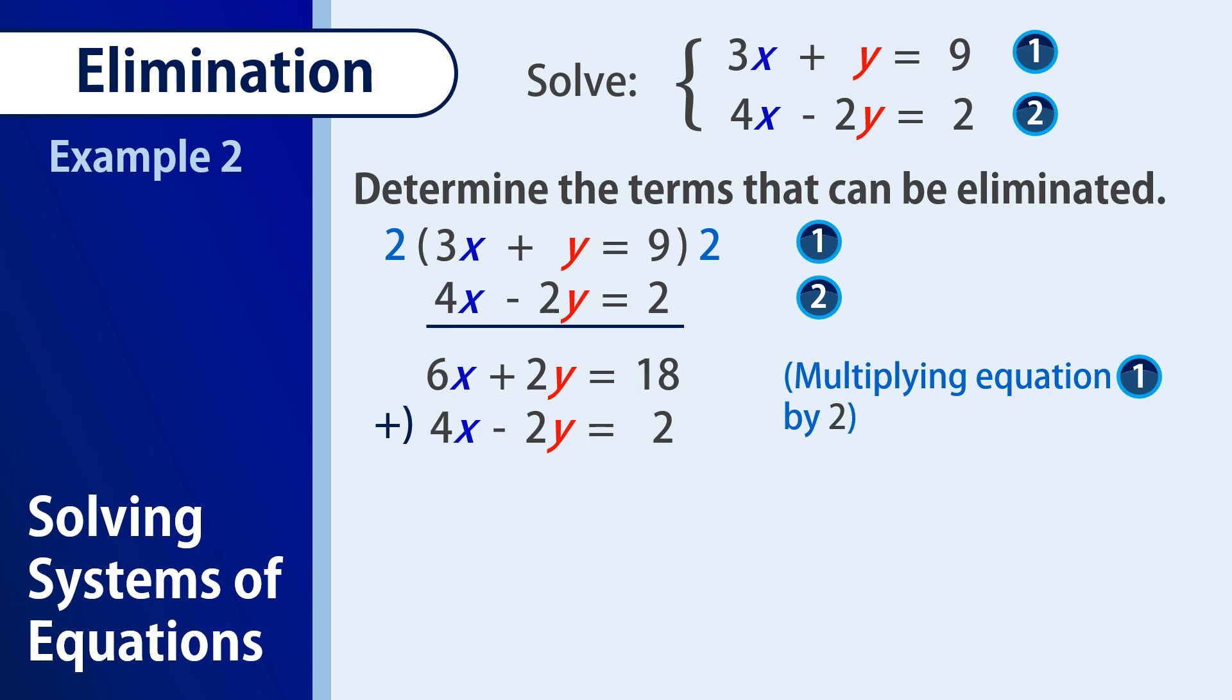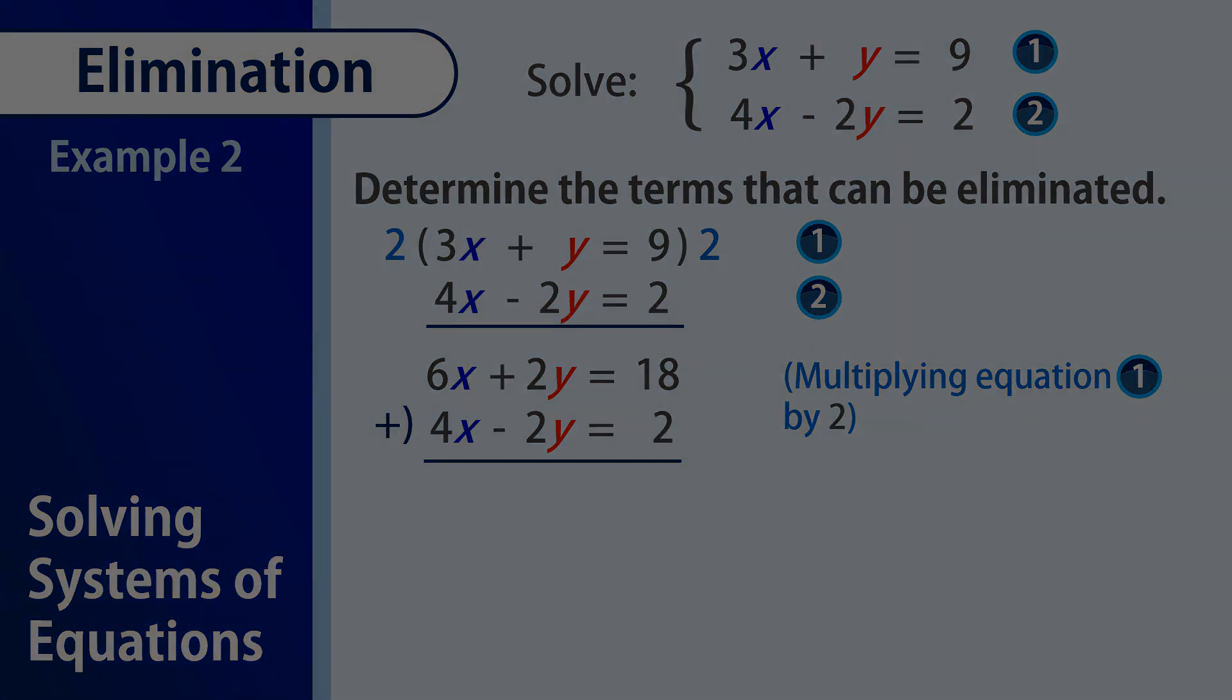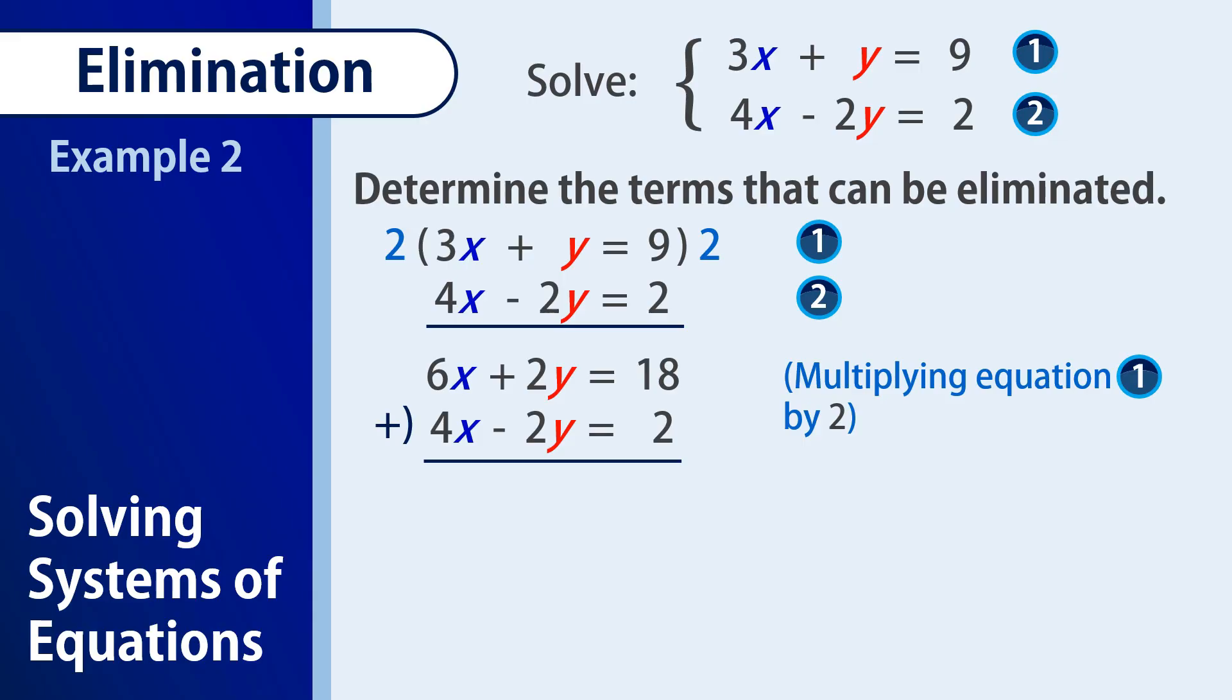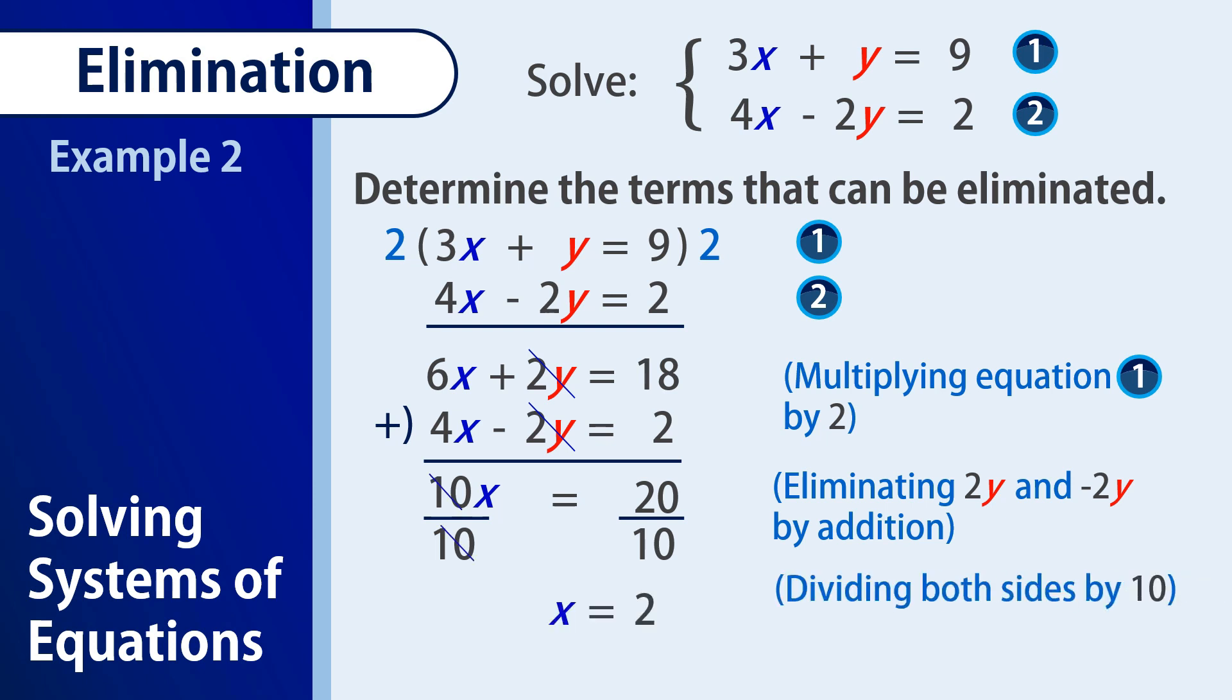They now have the same coefficient in that case. Also, notice that we can now add. We have 6x plus 4x is 10x, and then this 2y plus negative 2y becomes 0, and 18 plus 2 becomes 20. So dividing both sides by 10, we are already able to find x and x is equal to positive 2.